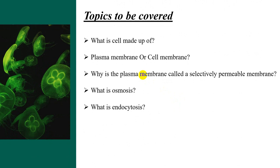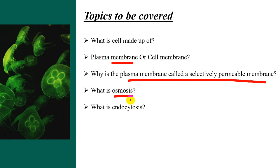Hi everyone, welcome to this channel. This is Dr. Sakrika. Today I will continue the fundamental of life chapter which we discussed last time. Today I will be covering: what is a cell made up of, plasma membrane or cell membrane, why is the plasma membrane called a selectively permeable membrane, what is osmosis, and what is endocytosis.